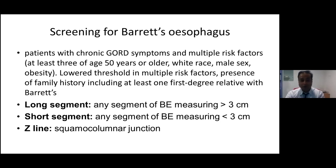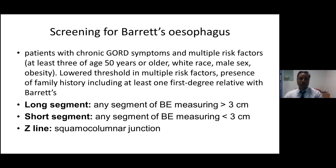It's important to understand long and short segments and also the Z-line. Long segment is any segment of Barrett's measuring more than three centimeters. Short segment is any segment measuring less than three centimeters. The Z-line is the squamocolumnar junction. An irregular Z-line refers to the presence of columnar-lined esophagus of less than one centimeter, often seen in cases with gastroesophageal reflux disease.